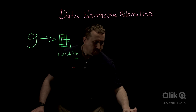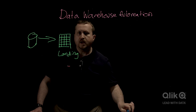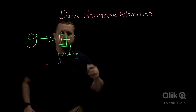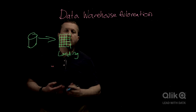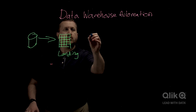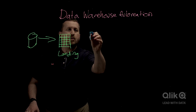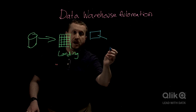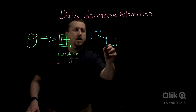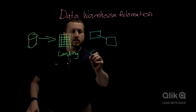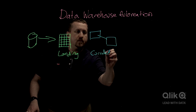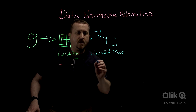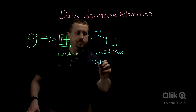The second zone is our curated zone, and that conforms the data to some well-known methodology. So that could be Data Vault, could be Inmon, could be Kimball. So our curated zone — and that's Data Vault.